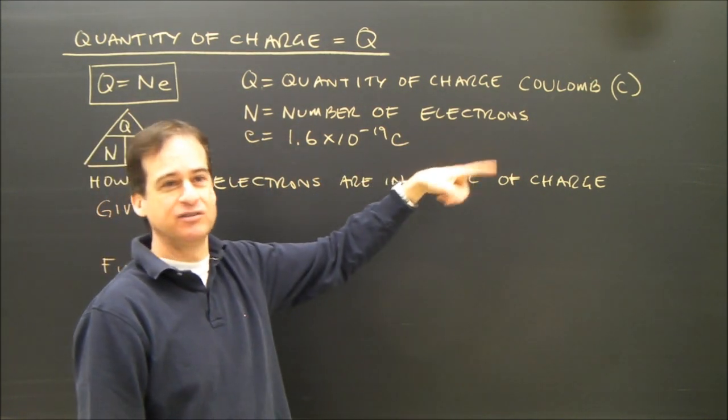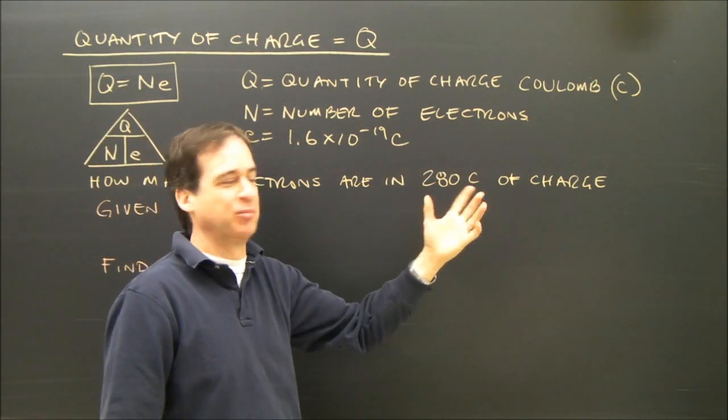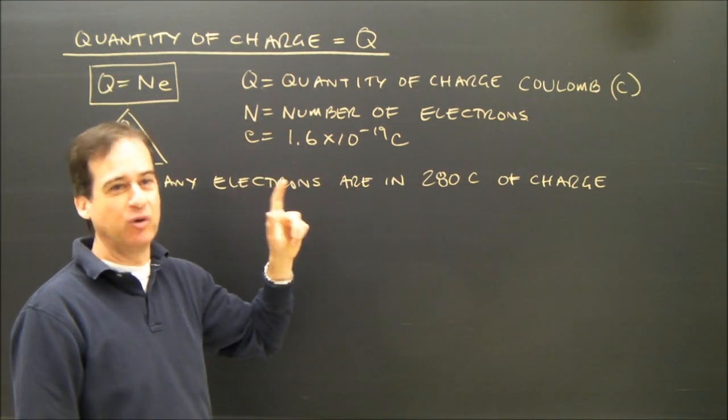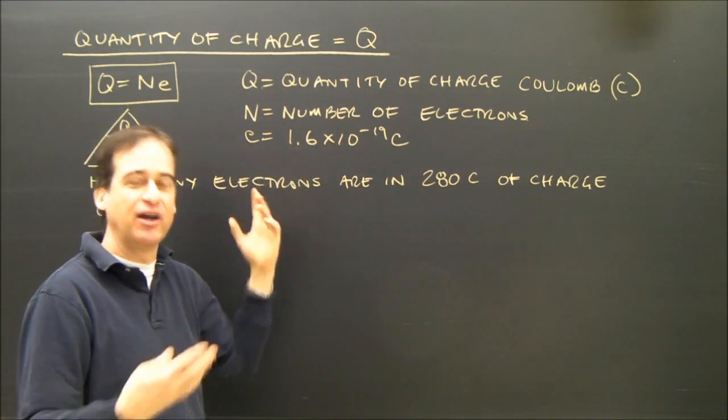N is the number of electrons, and so there are no units because it's a number. And E is the charge on one electron. It's a constant, so you have to be given that.